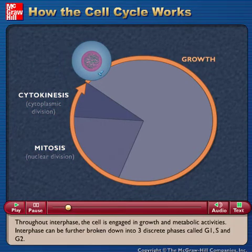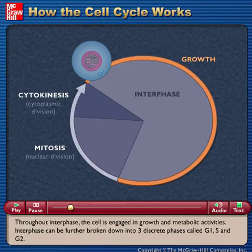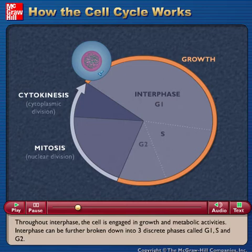Throughout interphase, the cell is engaged in growth and metabolic activities. Interphase can be further broken down into three discrete phases called G1, S, and G2.